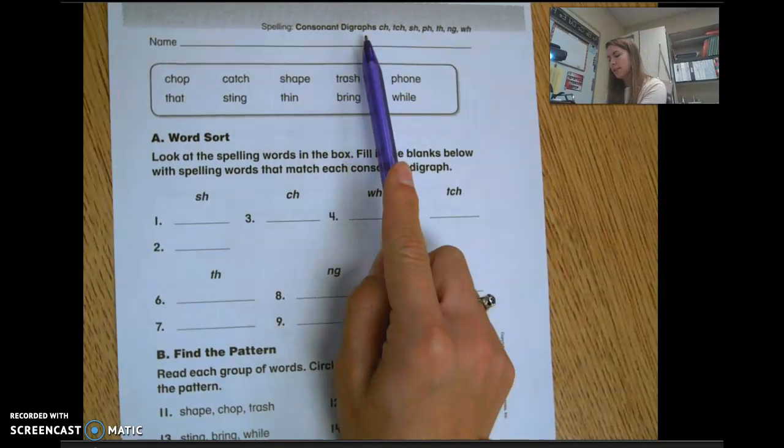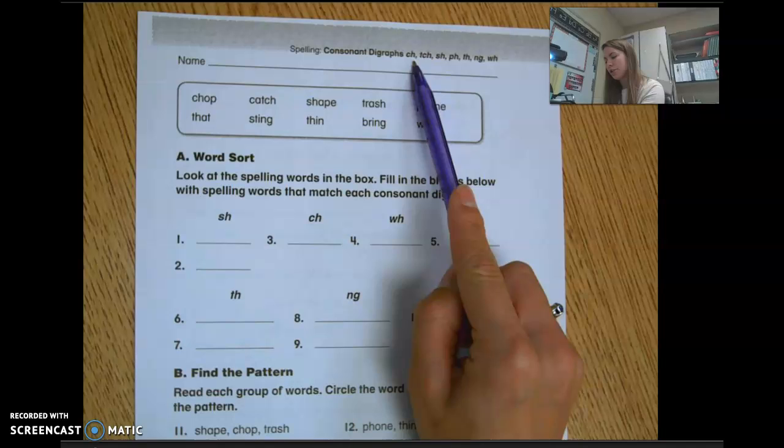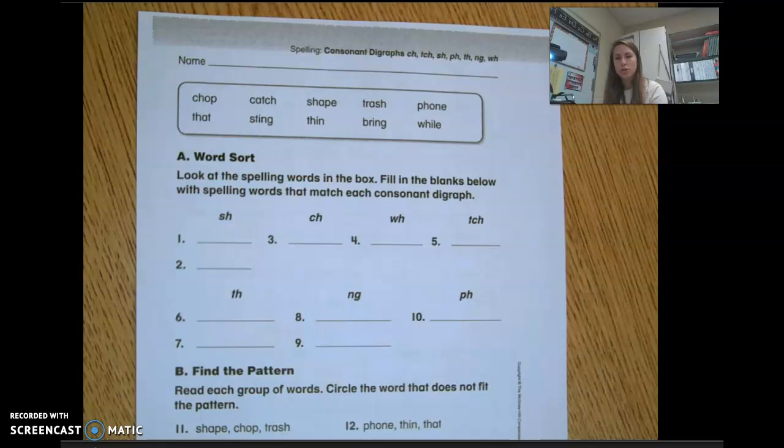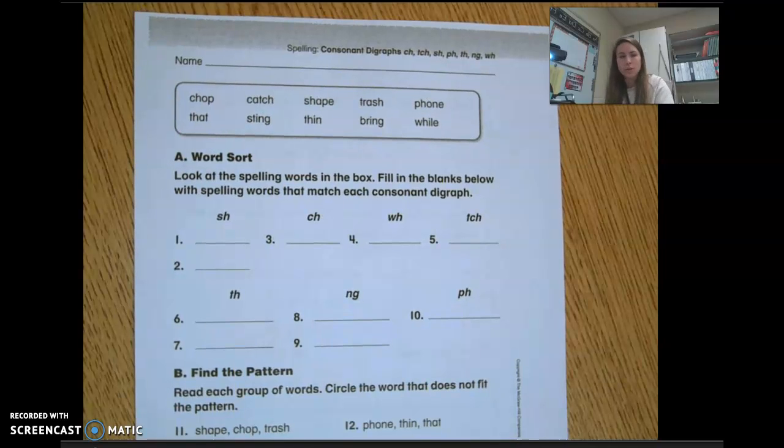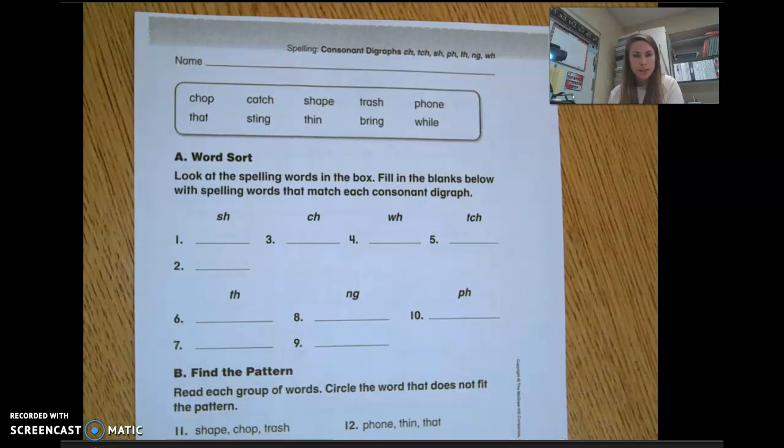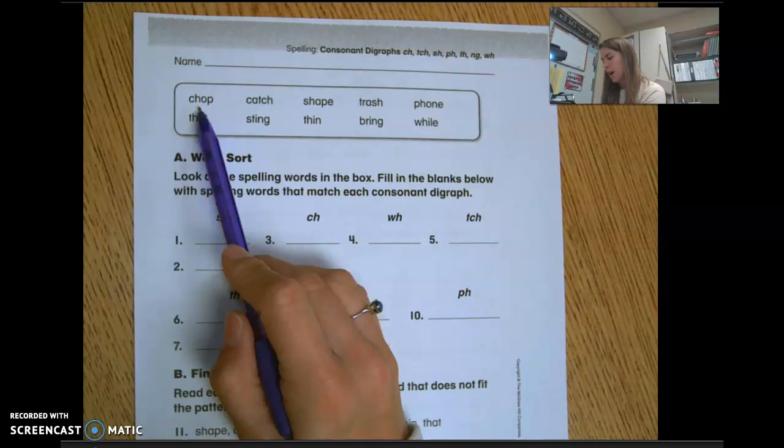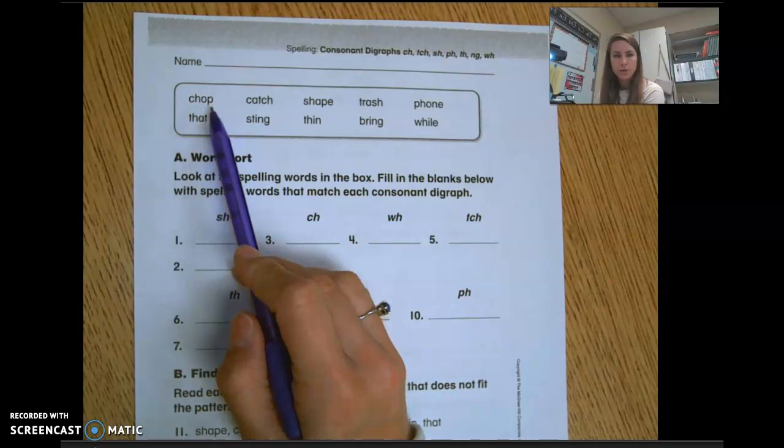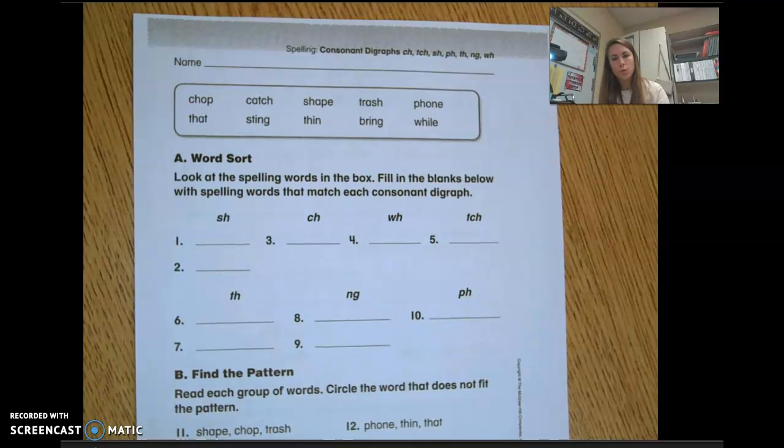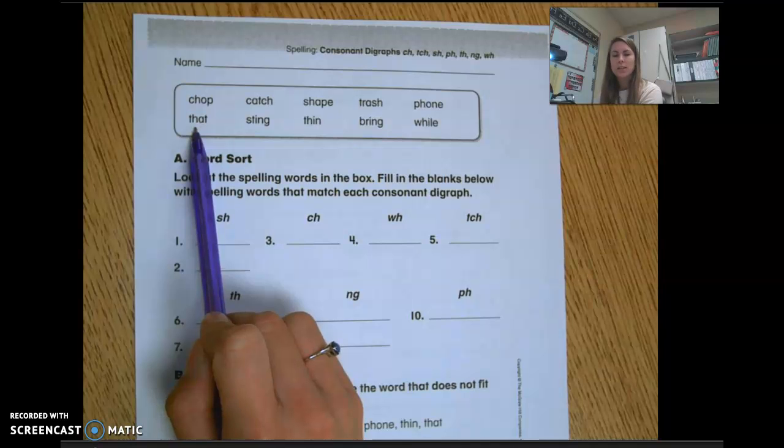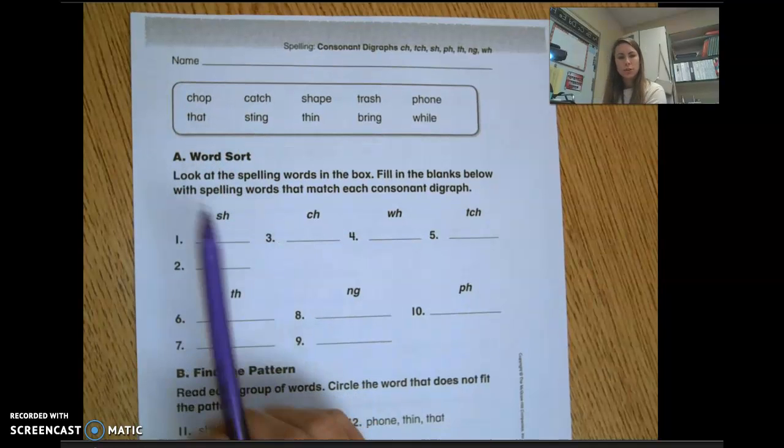They have consonant digraphs, which means they have ch, tch, sh, ph, th, ng, or wh. Now these sounds are multiple letters put together, like ch is two letters, but they have one sound that they make. So when I have ch at the beginning of a word, I know that makes the ch sound. It's two letters that make one sound.